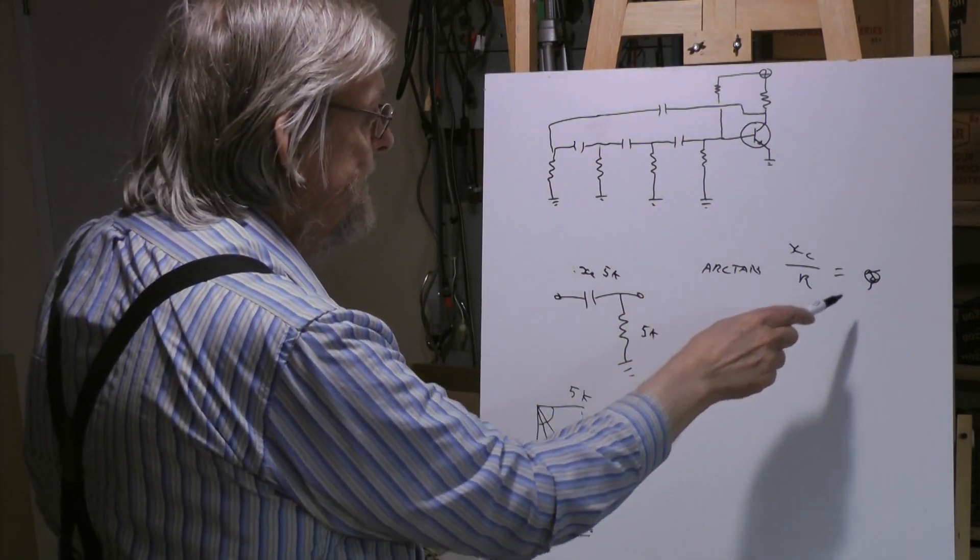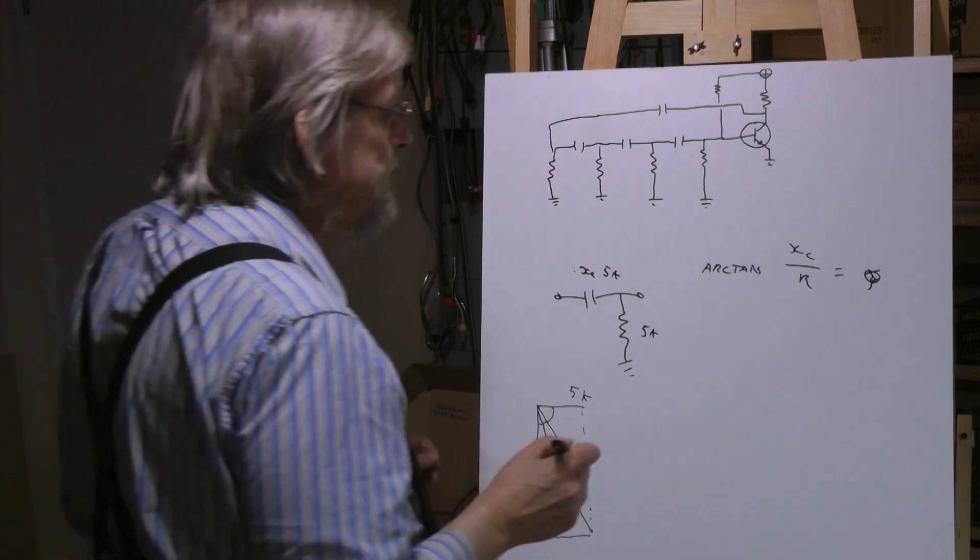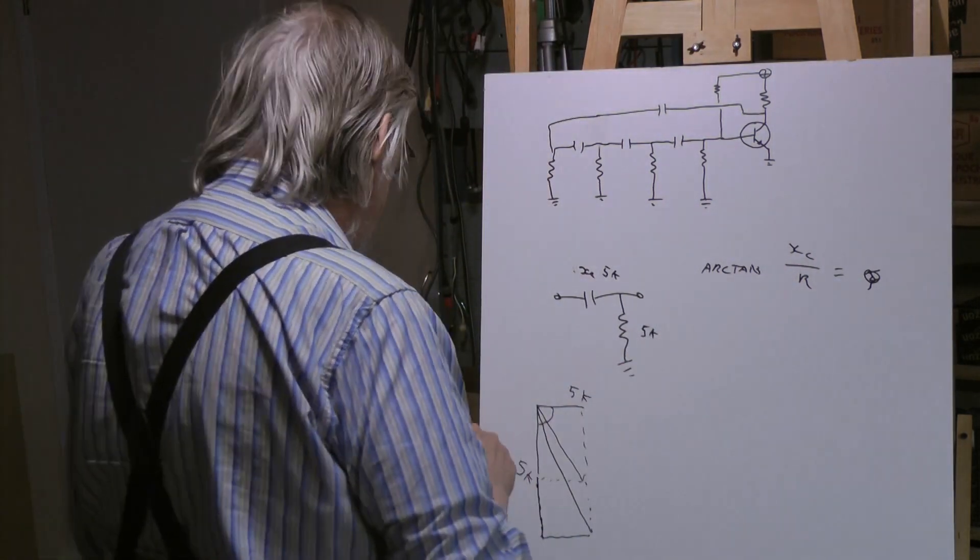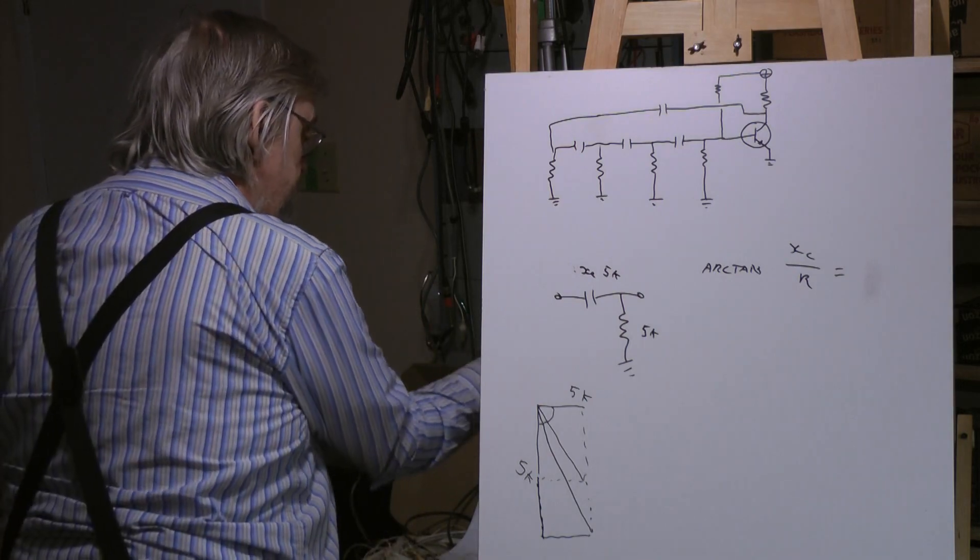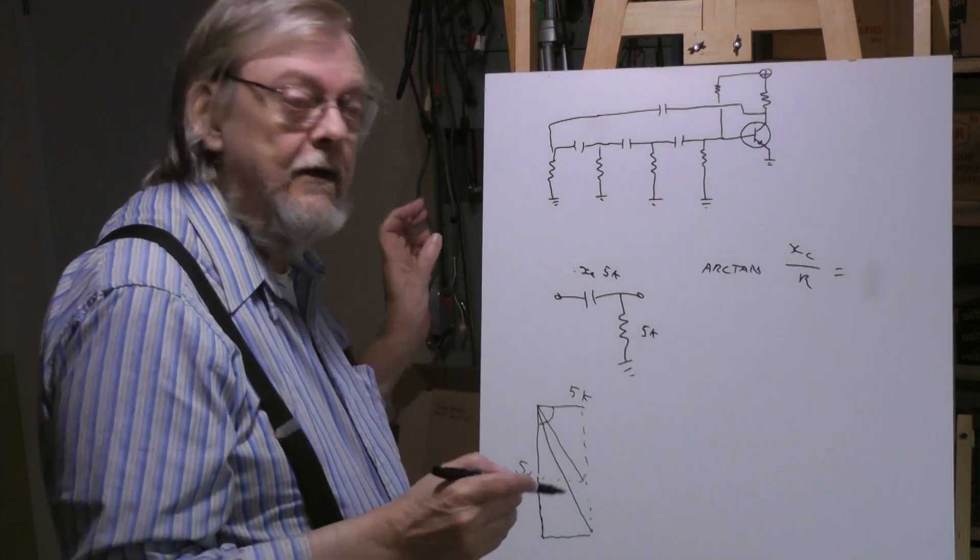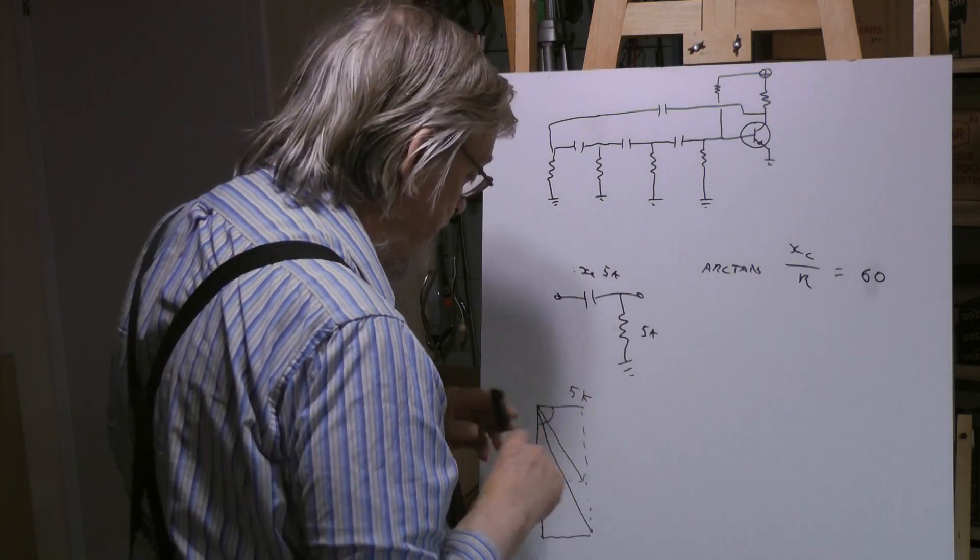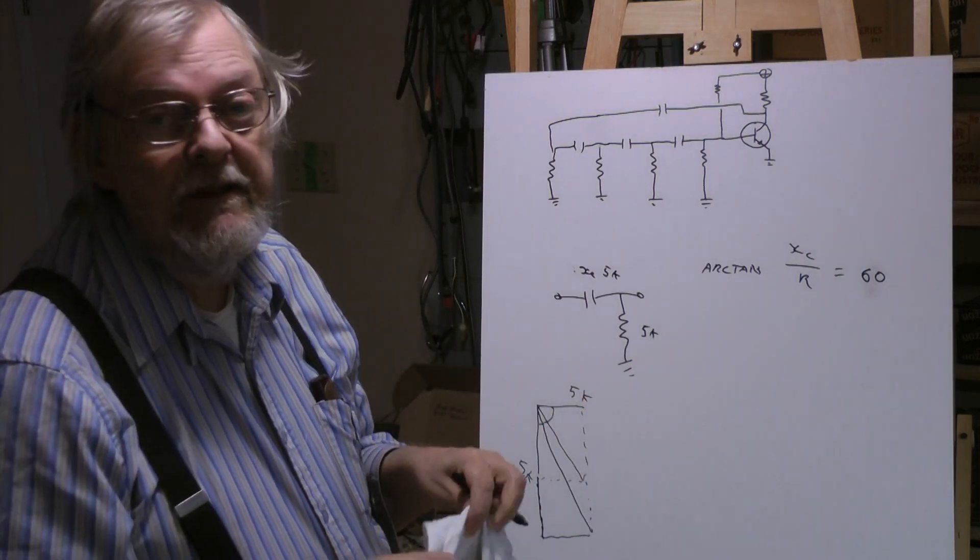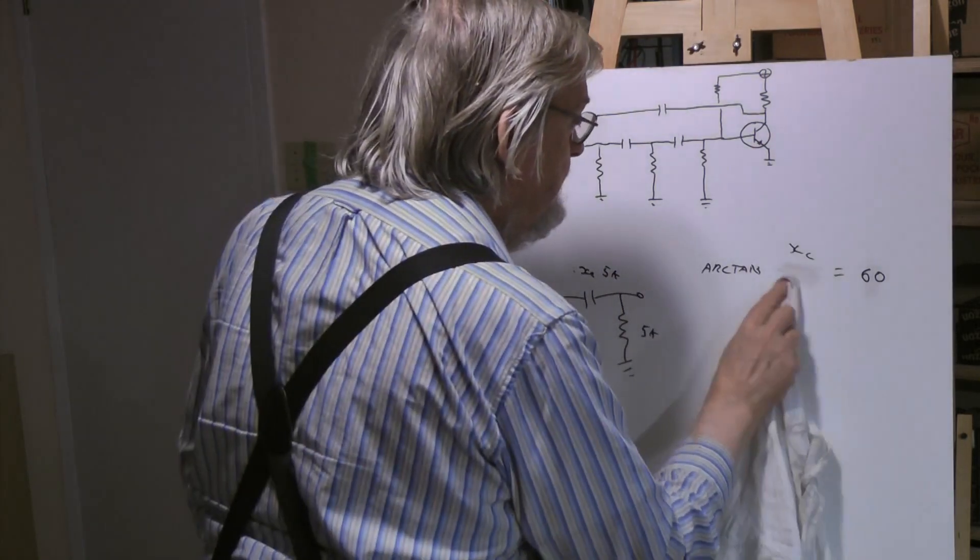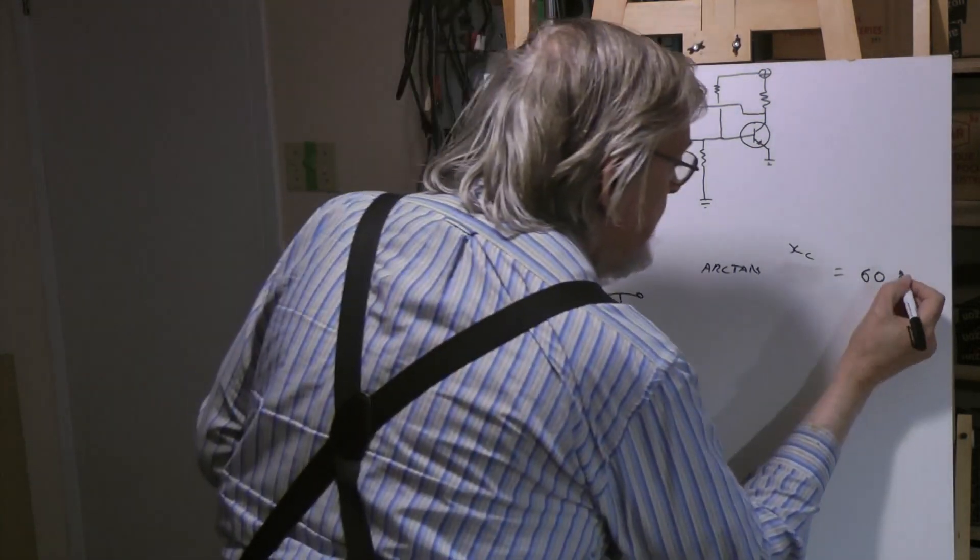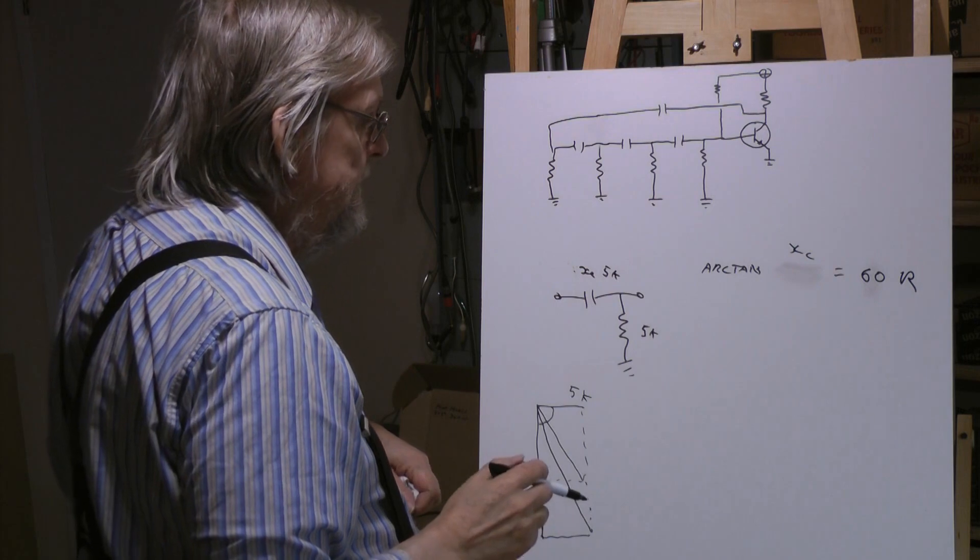If we have arctan XC over R to give us an angle and we want 60 degrees right, so we're going to have arctan XC over R equal to 60. Could do the 45 if you wanted more parts. So that's 60. So using some simple algebra, algebraic manipulation, we can get rid of that R. Arctan XC equals 60. I want to get rid of the arctan so we just tan it.